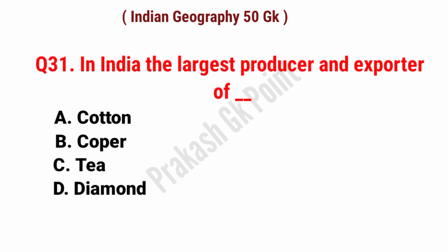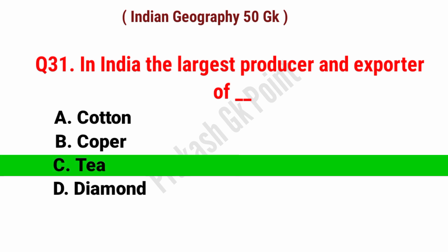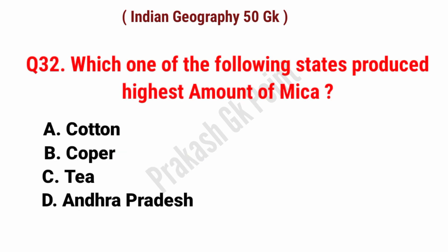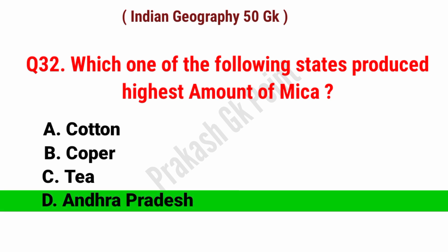In India, the largest producer and exporter of gas. Answer: option C. Which one of the following states produced the highest amount of mica? Answer: option D, Andhra Pradesh.